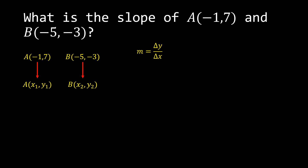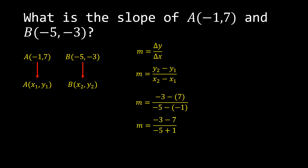Slope is equal to change in y over change in x, therefore y sub 2 minus y sub 1 all over x sub 2 minus x sub 1. Identifying the elements, we have y sub 2 as negative 3, minus y sub 1 which is 7, then negative 5 as x sub 2, minus negative 1 which is x sub 1.